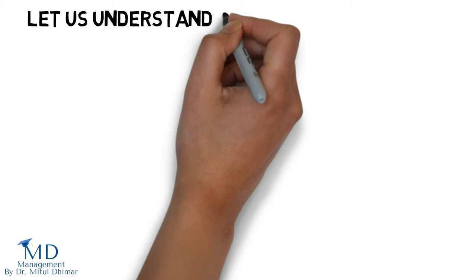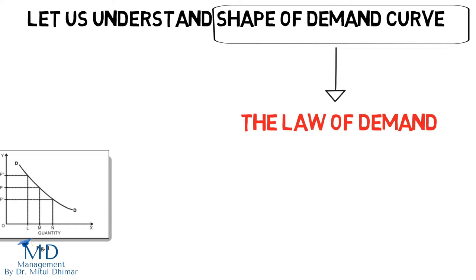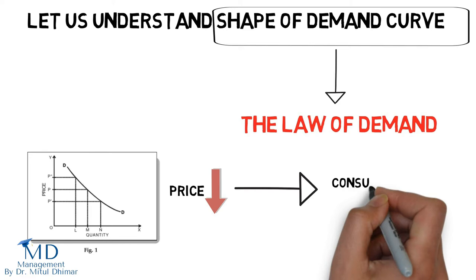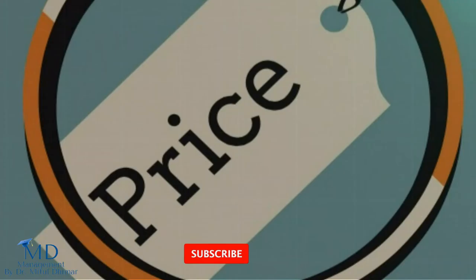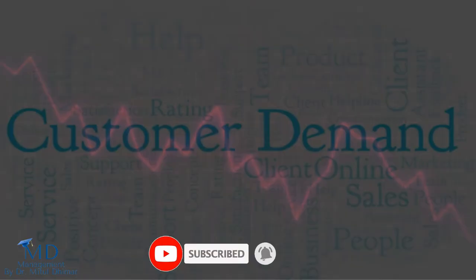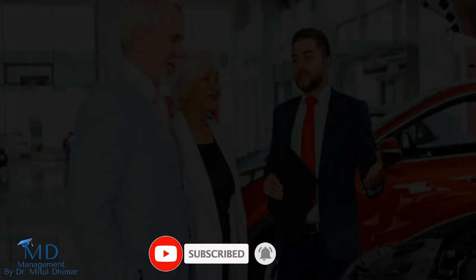Now let us understand the shape of demand curve. The demand curve is shaped by the law of demand. In general, this means that the demand curve is downward sloping, which means that as the price of a good decreases, consumers will buy more of that good.